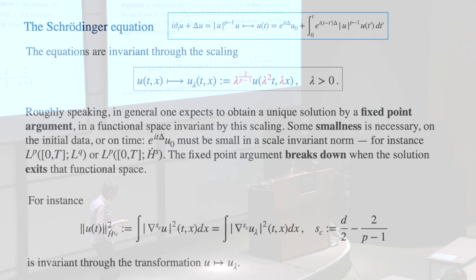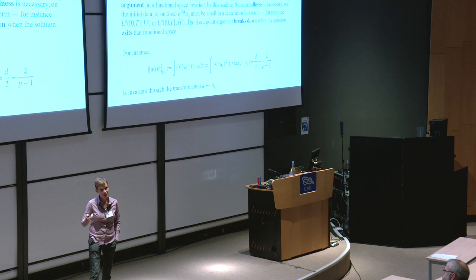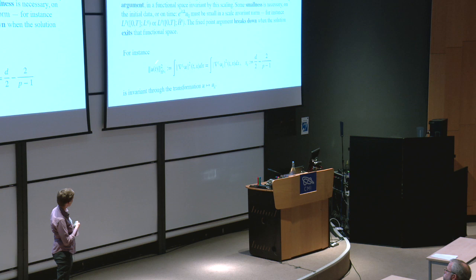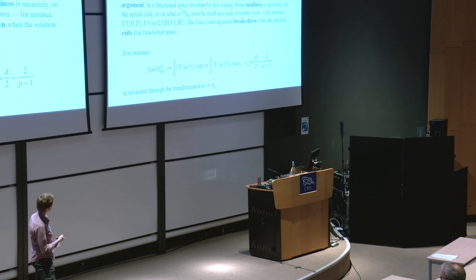You compute things and notice that if you take s_c — the critical number of derivatives in L2, computed by Fourier analysis — then this norm is invariant under the scaling, for any time. L-infinity in time valued in this space is invariant. That means you should do your fixed point in this space, take your initial data there, and your theorem says: for small data in that space, you probably have a global solution; for large data, maybe only for a short time.